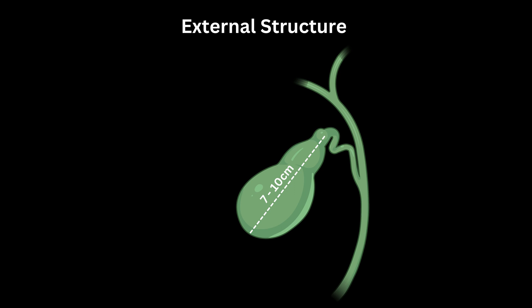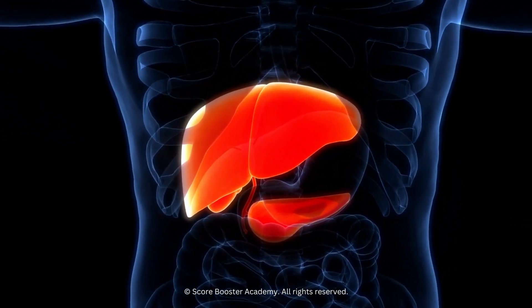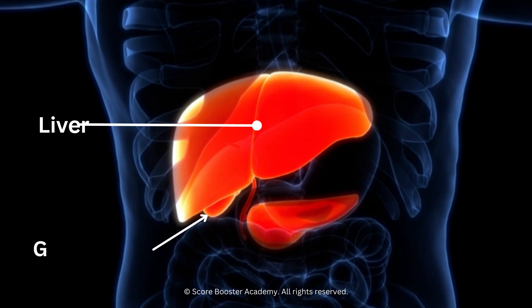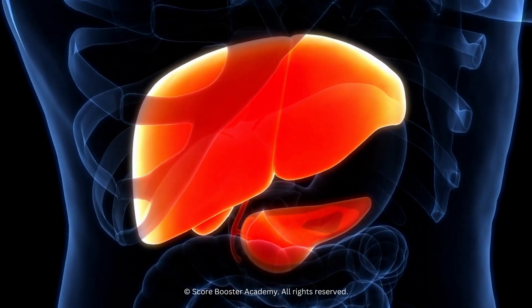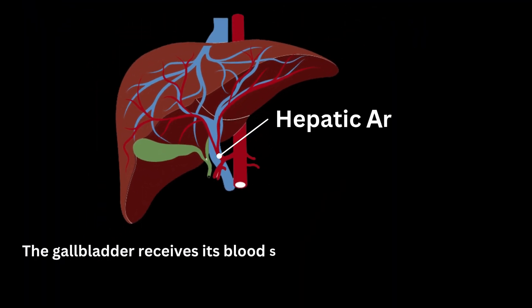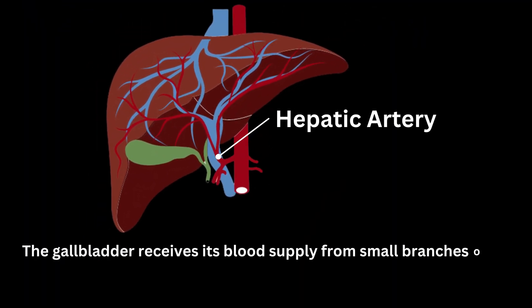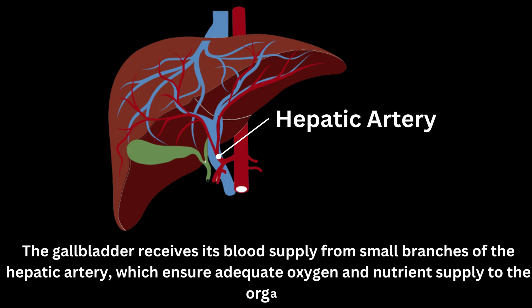It is located on the undersurface of the liver, tucked within a small depression called the gallbladder fossa. The gallbladder receives its blood supply from small branches of the hepatic artery, which ensure adequate oxygen and nutrient supply to the organ.